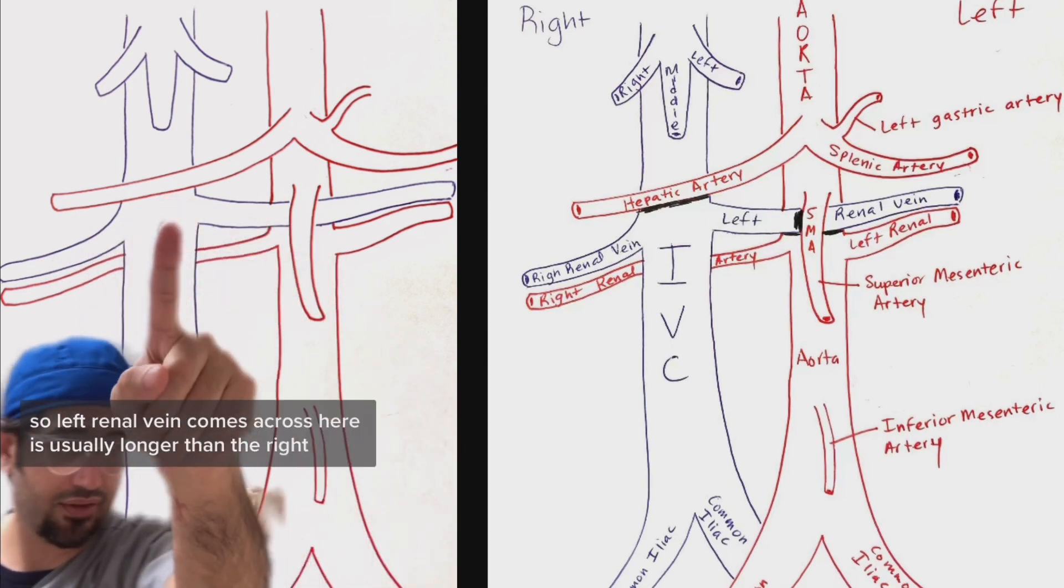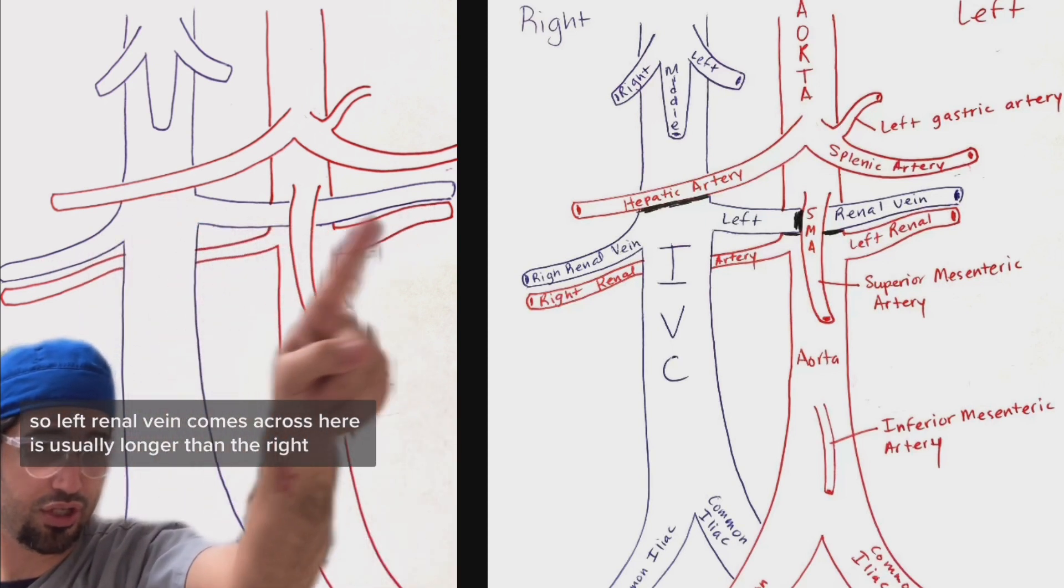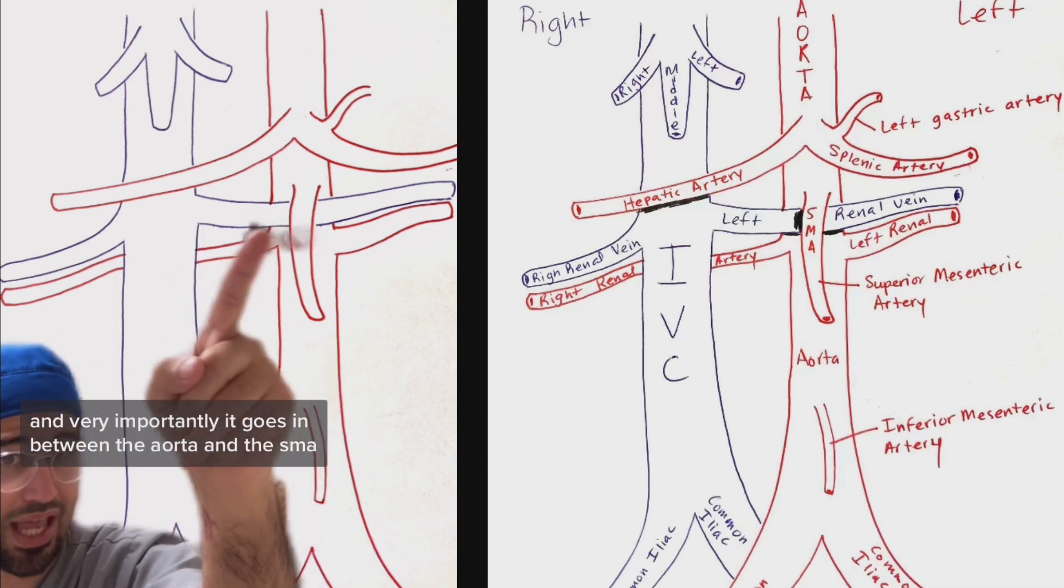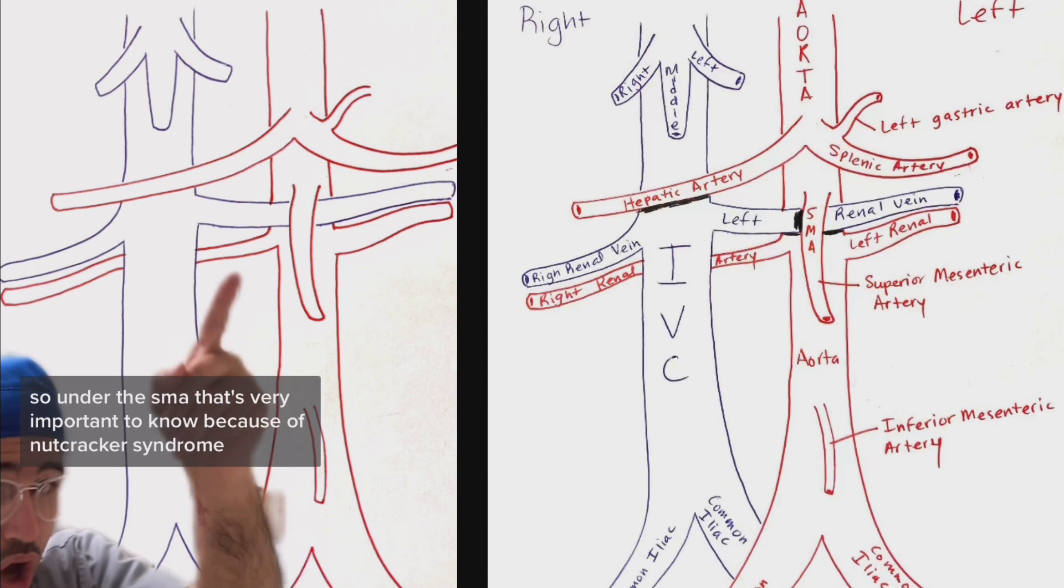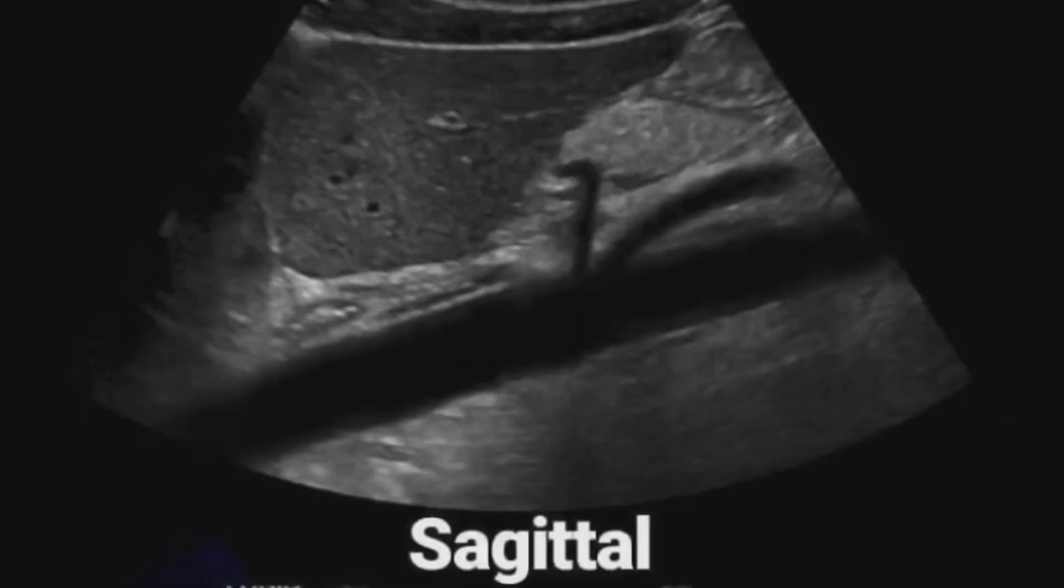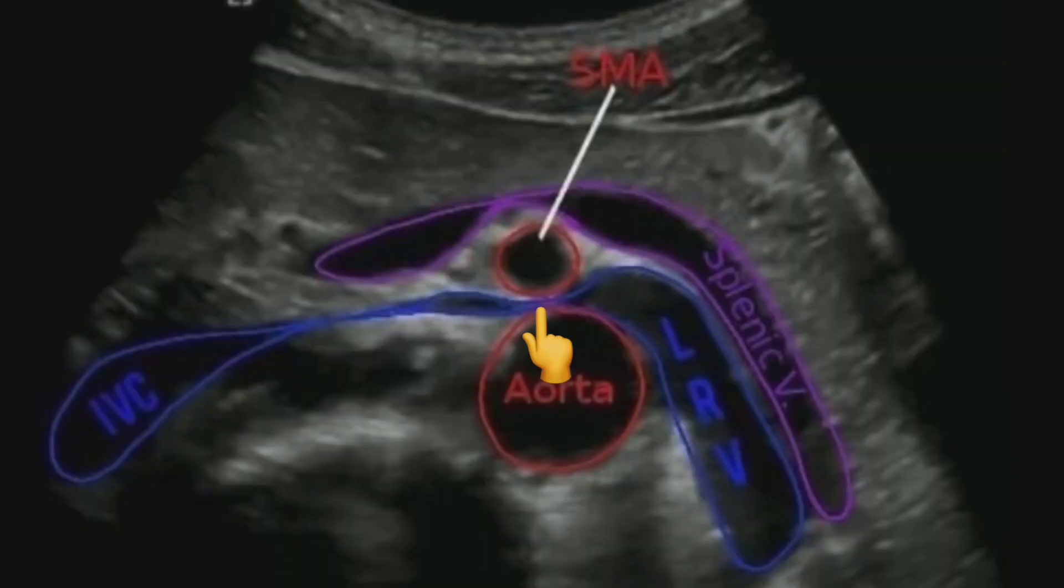So the left renal vein comes across here, is usually longer than the right, and very importantly it goes in between the aorta and the SMA, so under the SMA. That's very important to know because of nutcracker syndrome, which is compression of the left renal vein from the angle of the SMA to the aorta.